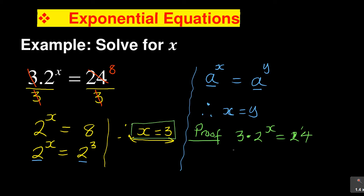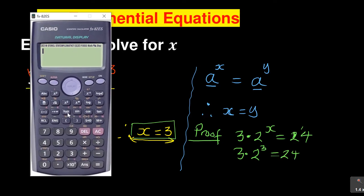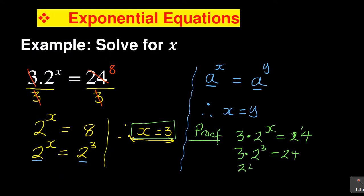So substitute: 3·2^3 must give me 24. If I check with my calculator, 3 times 2 to the exponent 3 equals 24. You can see that 24 on the left-hand side balances 24 on the right-hand side. Therefore, left-hand side equals right-hand side, which means my value for x equals 3 is correct.